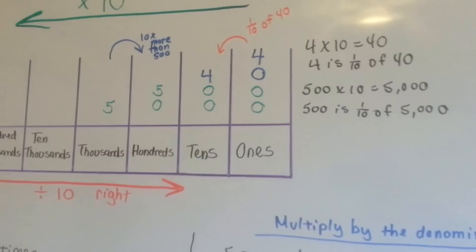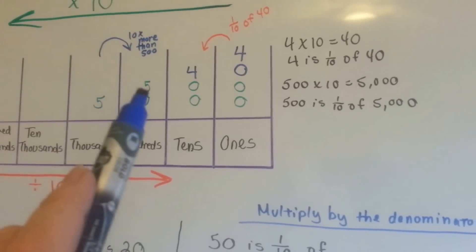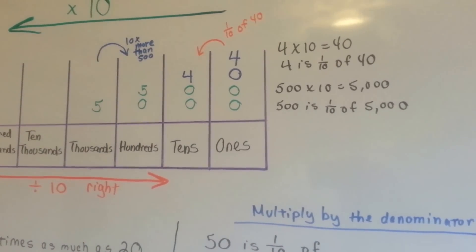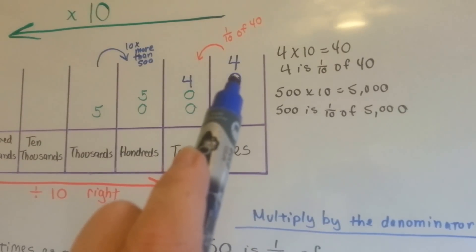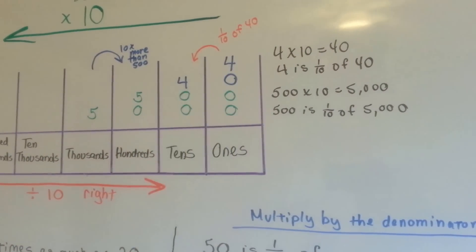See? 500 is 1 tenth of the 5,000 because it takes 10 of them to get the 5,000. Alright? It takes 10 fours to get to be the 40. So 4 is 1 tenth of 40.